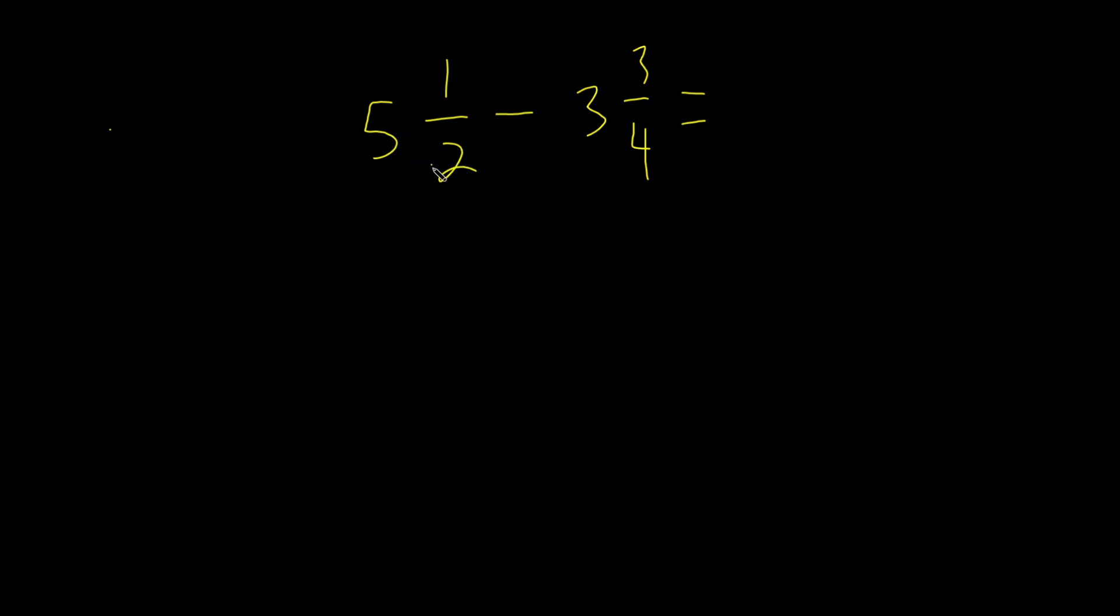Our first step is to multiply 5 times 2 and that's 10. Then we're going to add the 10 with our numerator 1. So our new numerator is going to be 11, because 5 times 2 is 10 and 10 plus 1 is 11. We keep our denominator as is, so we're going to write a 2.